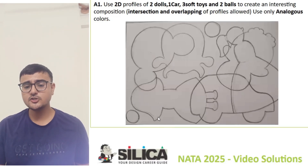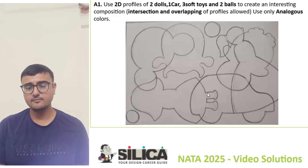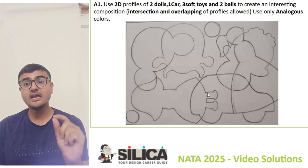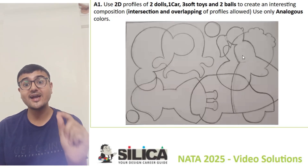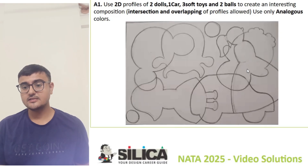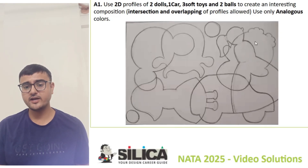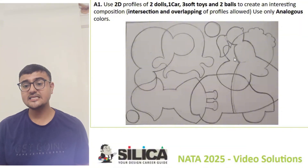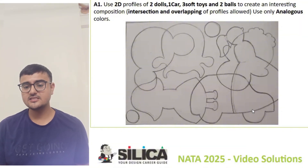In the composition you can see two dolls — you can see the doll profile, and you only have to use profiles. The second doll and three soft toys — one, two, and three — you can see the intersection between them.